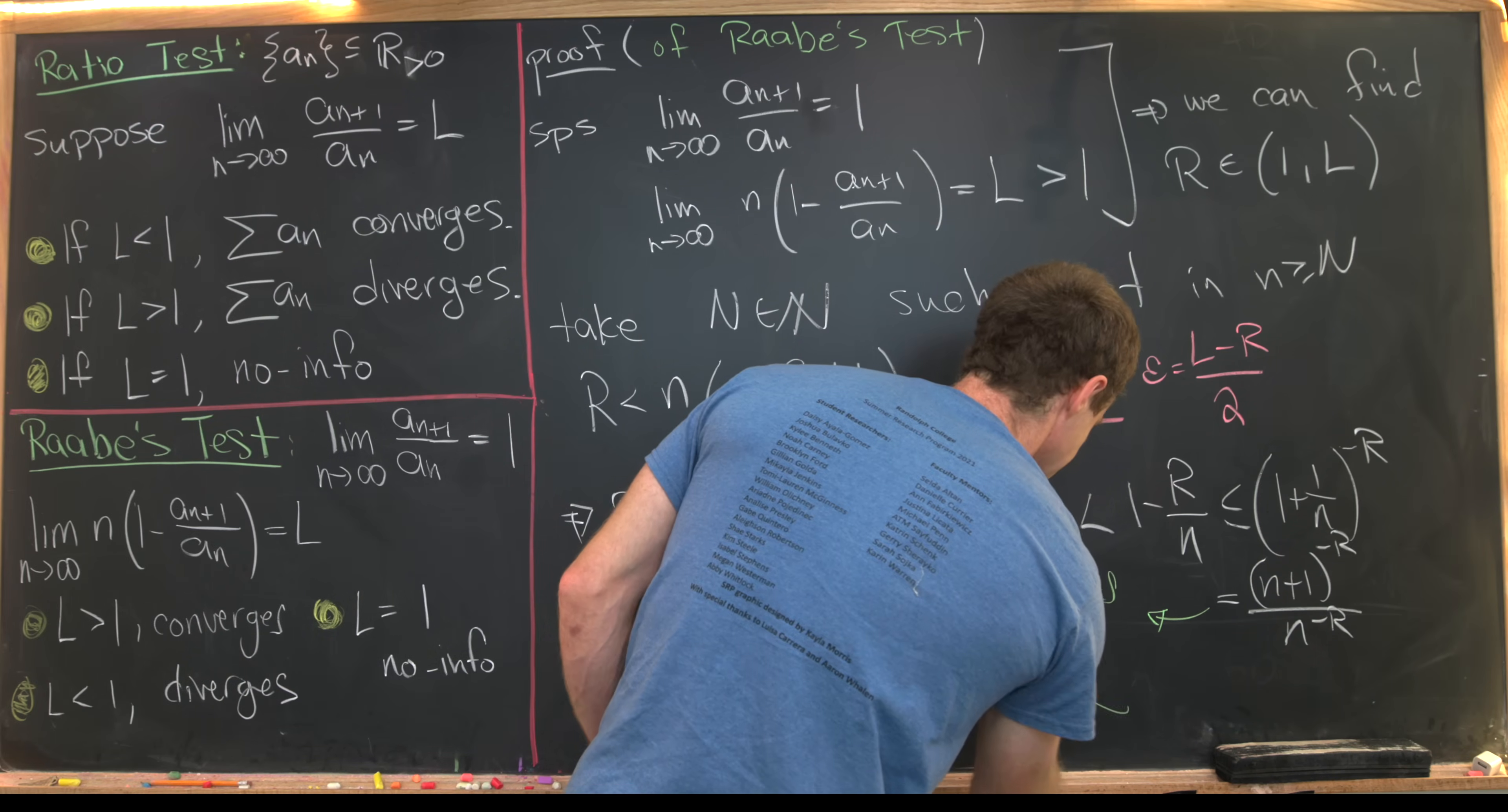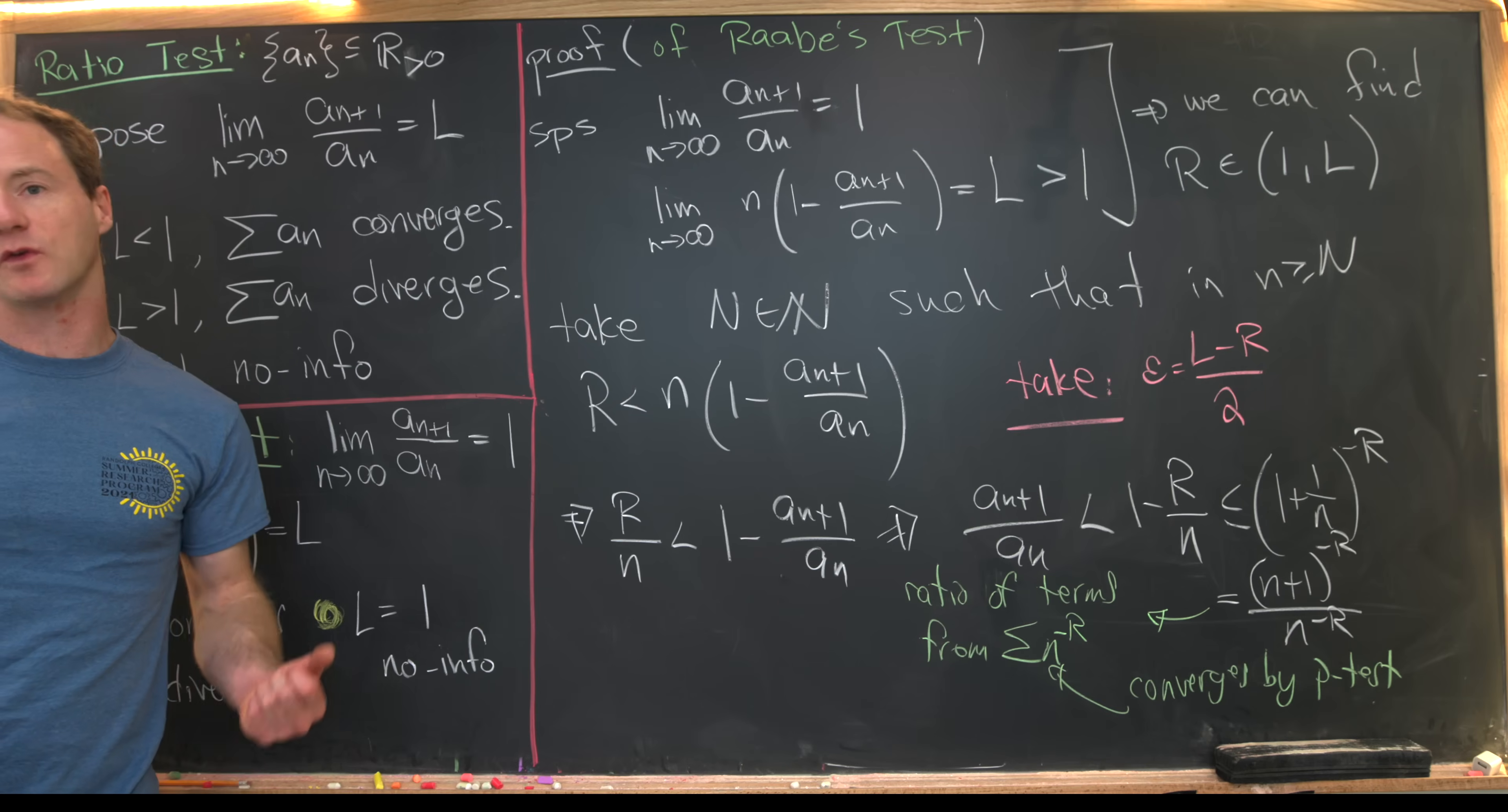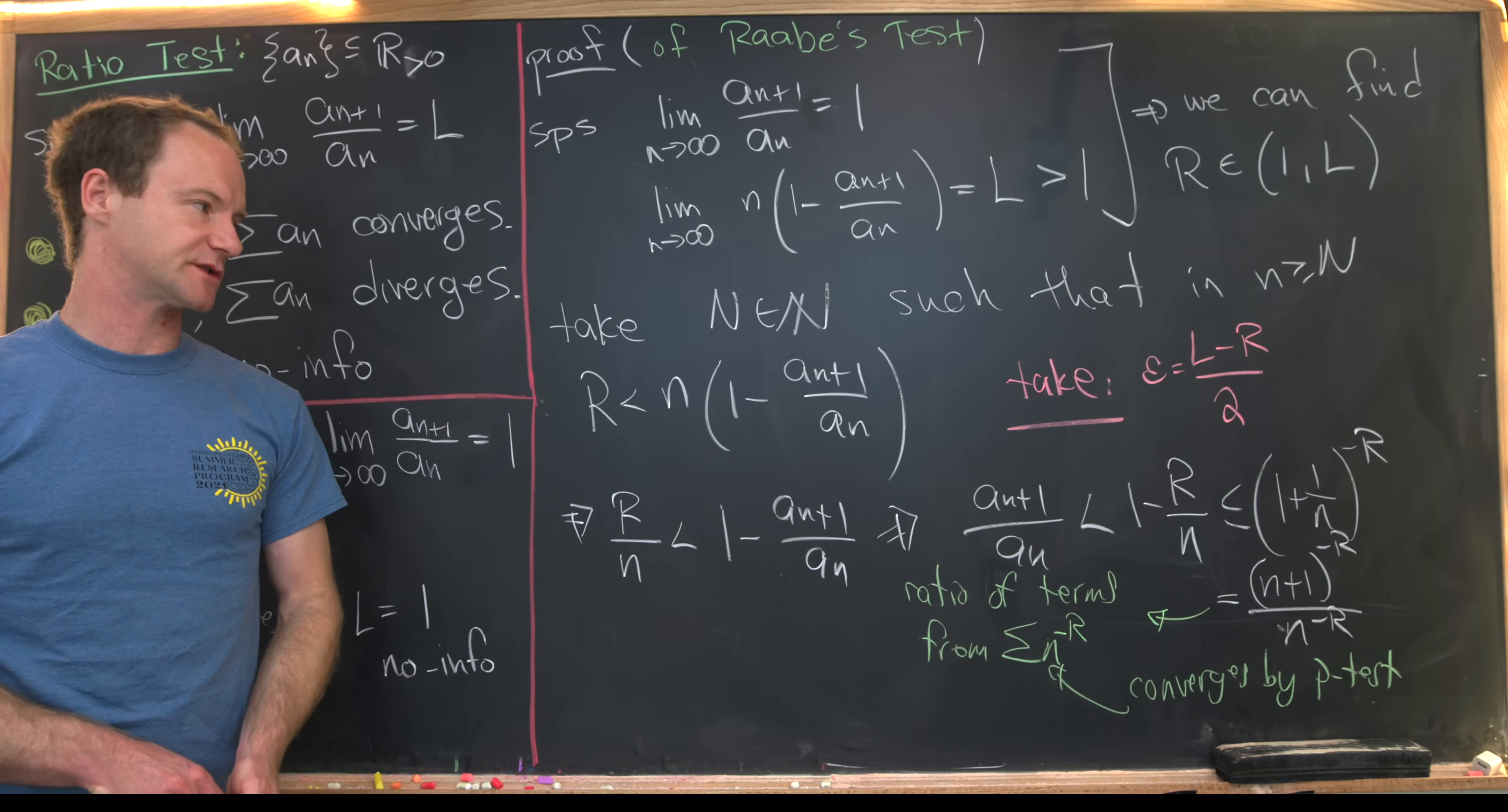And we know that this series most definitely converges by something that's generally called the p-test. So here our r is bigger than 1, so we know this thing converges. But then we've bounded our series below something having to do with a series that obviously converges, so that means that our series must also converge.